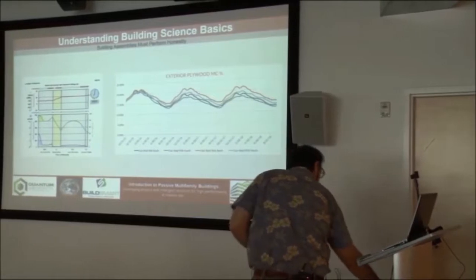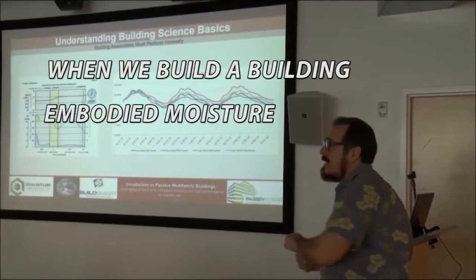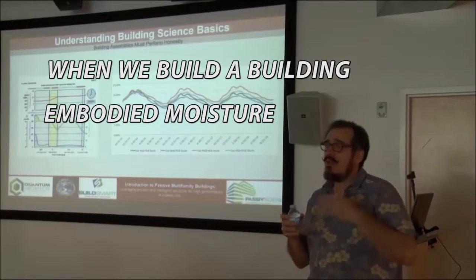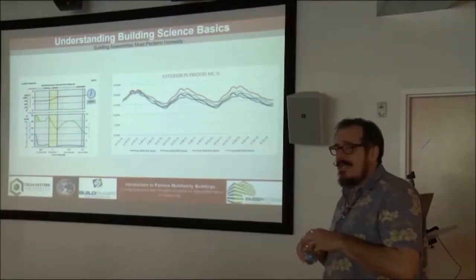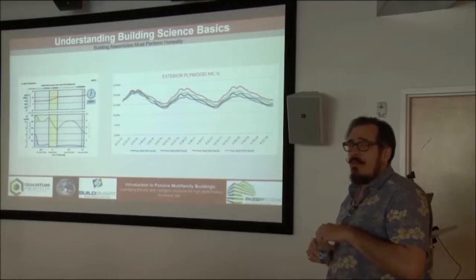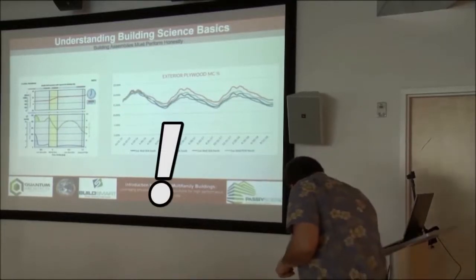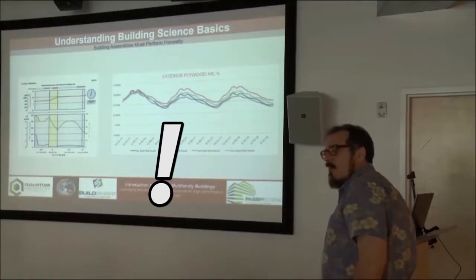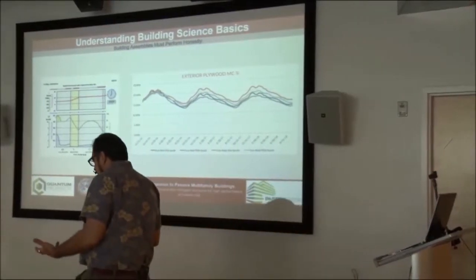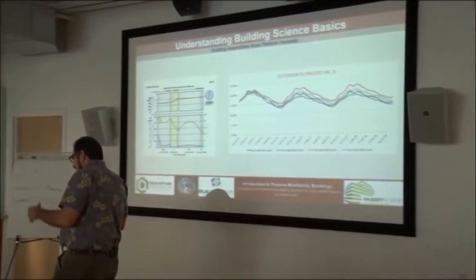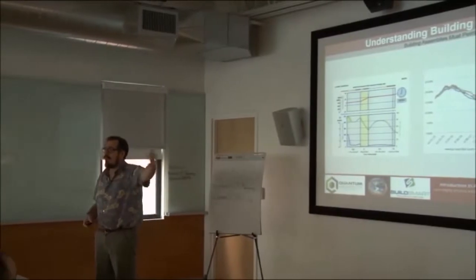We want to look at those building assemblies over time. When we build a building initially, there is an embodied moisture content within that building that is going to be higher than the long-term moisture. It's the nature of construction — everything we put in is wet: concrete, drywall compound, adhesives on floors, wet wood. All this stuff makes the building initially wetter than it will be over the long-term.